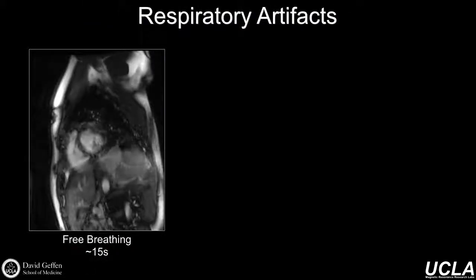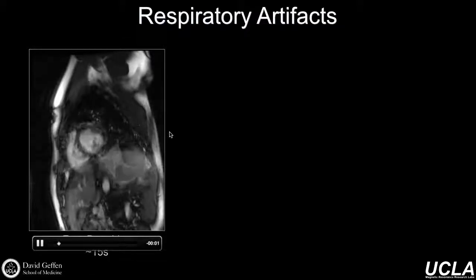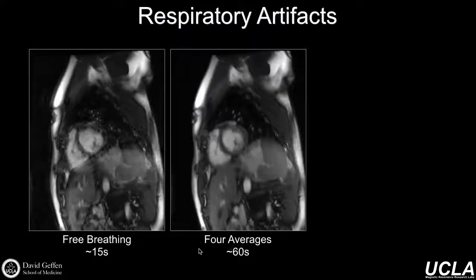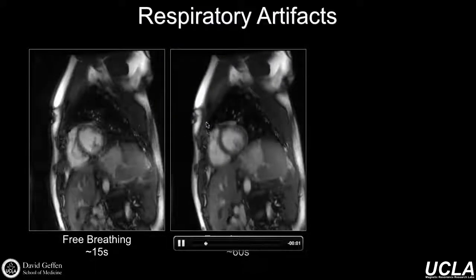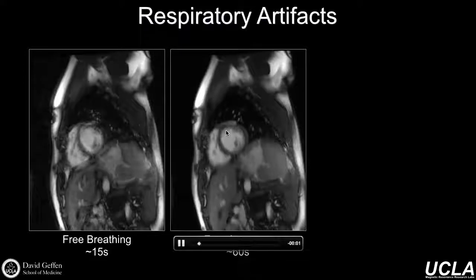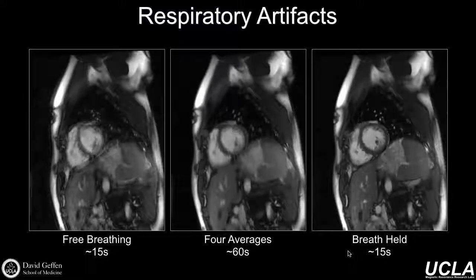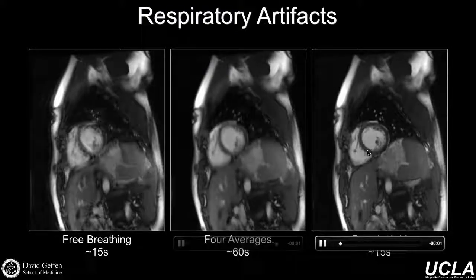Something we encounter all the time is respiratory artifacts. Patients can hold their breath to varying degrees, and in the case of a free-breathing acquisition you can get non-diagnostic image quality that will need to be repeated. One very easy option available on all scanners is simply averaging — it's not great but it does work. Four averages obviously extend your acquisition time and overall image quality is not fantastic, but images are still usable. There are more sophisticated ways of getting much higher quality images, but they're not necessarily as widely available across all manufacturers.